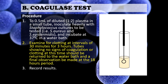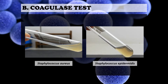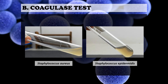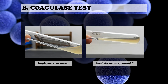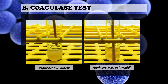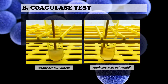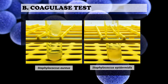After 30 minutes, examine for clotting at intervals of 30 minutes for 3 hours. Tubes showing no signs of coagulation at this time should be returned to the water bath and the final observation made at the 18-hour period. Then record your results. In the Staphylococcus aureus tube, you can see a slightly cloudy gel-like clot formation in the upper portion, while there is none in the tube for Staphylococcus epidermidis. In another video clip, you can see the gel-like clot in the tube of Staphylococcus aureus, indicating that this organism is coagulase positive.